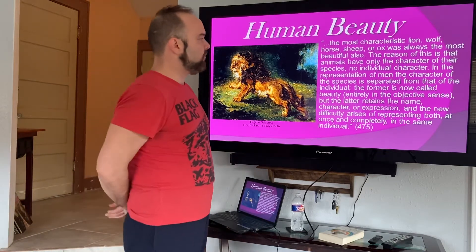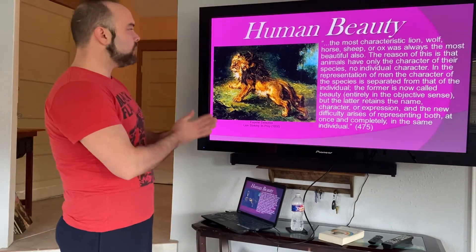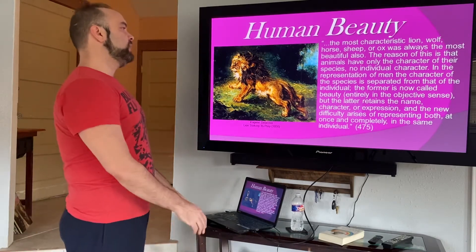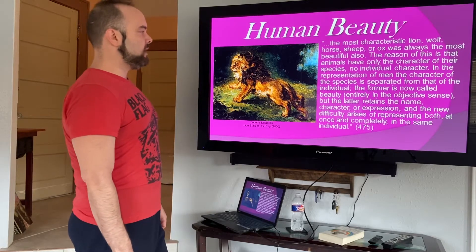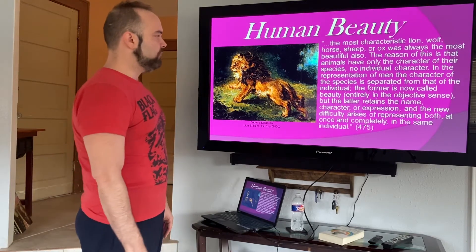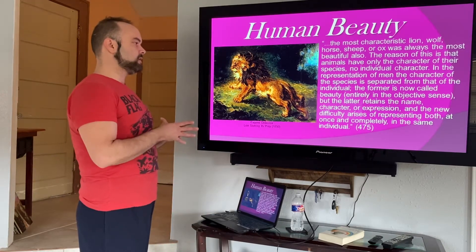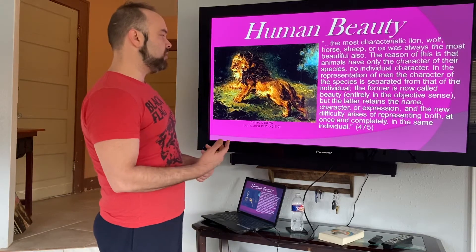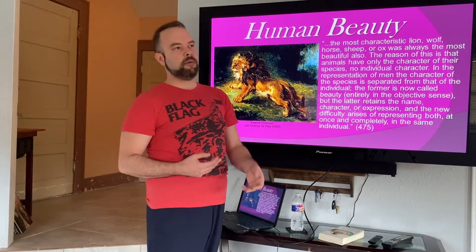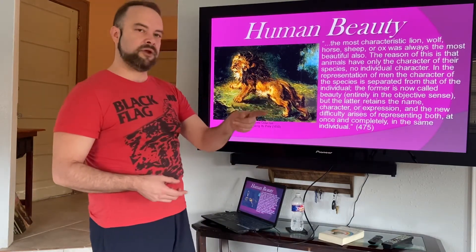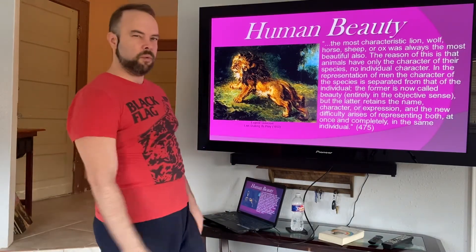The most characteristic lion, wolf, horse, sheep, or ox was always the most beautiful also. The reason is that animals have only the character of their species, no individual character. In the representation of men, the character of the species is separated from that of the individual — the former is called beauty in the objective sense, but the latter retains the name character or expression. A new difficulty arises of representing both at once and completely in the same individual. How do you paint someone famous and bring out their unique character while also showing them as this Platonic ideal, as this objectification of the will at its highest grade?